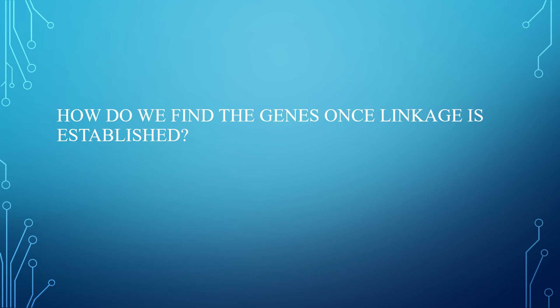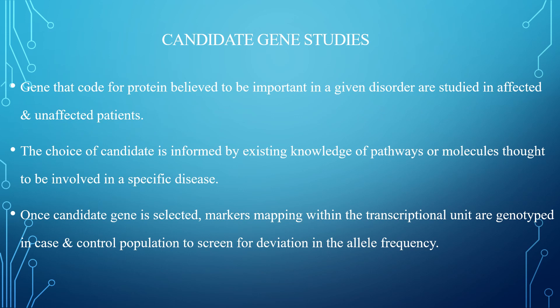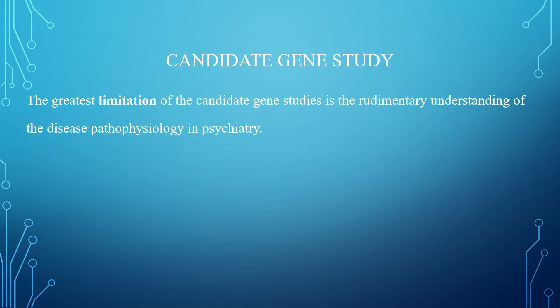Once linkage is established, gene-finding studies include candidate gene studies, where genes that code for proteins believed to be important in a given disorder are studied in affected and unaffected patients. The choice of candidates is informed by existing knowledge of pathways or molecules thought to be involved in a specific disease. Once a candidate gene is selected, markers within the transcriptional unit are genotyped in case and control populations to screen for deviation in allele frequency. The limitation of this study is that it is based on rudimentary understanding of disease pathology in psychiatry — we aim for already-known genes only and are not looking for newer genes or molecules.